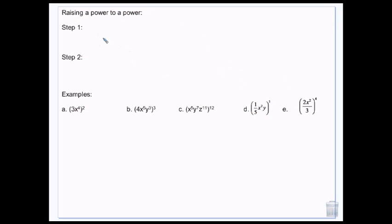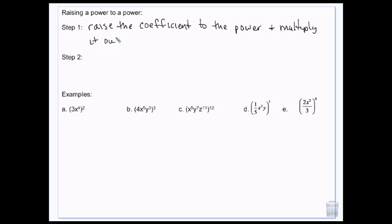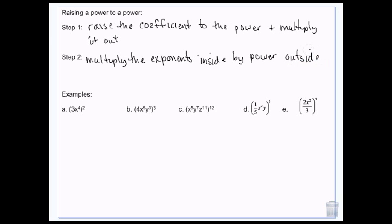When you raise a power to a power, you're going to raise the coefficient to the power, and then you're going to multiply the exponents inside by the power outside. So this is 3x to the 4th squared. What that actually means is 3x to the 4th times 3x to the 4th. But if you have something like the 12th power, we don't want to write x to the 5th, y to the 7th, z to the 11th out 12 times and then do all that work. So there's a shortcut.